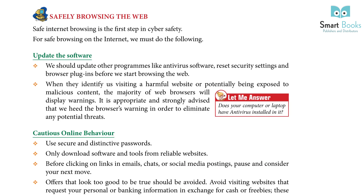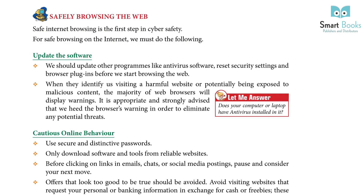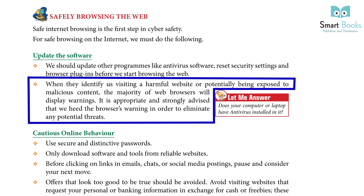Safe internet browsing is the first step in cyber safety. For safe browsing on the internet, we must do the following. Update software: we should update other programs like antivirus software, reset security settings, and browser plug-ins before we start browsing the web. When they identify a harmful website or potential exposure to malicious content, the majority of web browsers will display warnings. It is strongly advised that we heed the browser's warning in order to eliminate any potential threats.